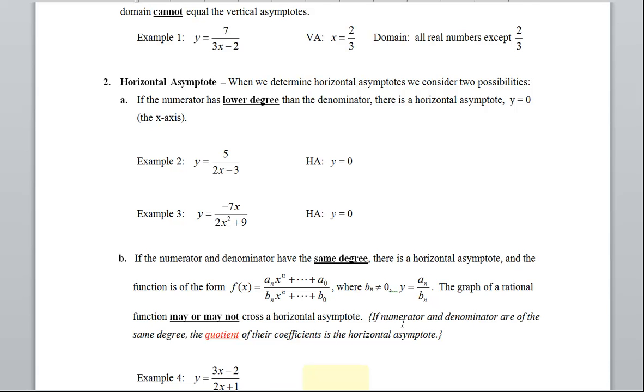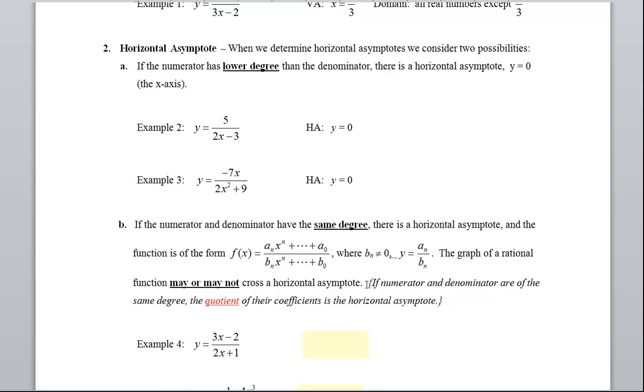Now in braces here and in italics, I sort of summarize this. If numerator and denominator are of the same degree, the quotient of their coefficients, referring to the largest powers that you've got, is the horizontal asymptote.